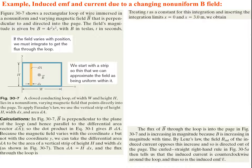Let's do another example: the induced EMF and current due to a changing non-uniform B field. A rectangular loop of wire is immersed in a non-uniform and varying magnetic field that's perpendicular to and directed into the page. The field's magnitude is given by B = 4T²X². In this case, the B field is dependent not only on time but also on position — it varies with the X coordinate.